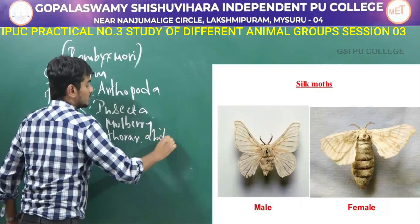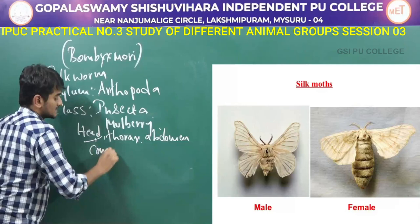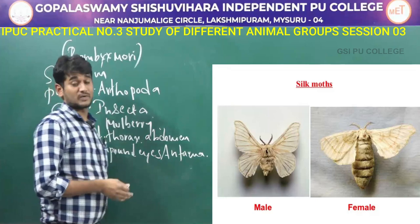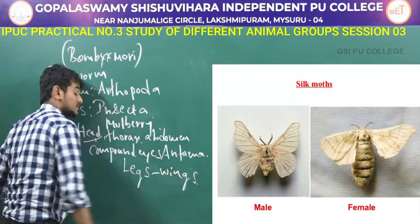Each part is covered with microscopic scales. The head contains a pair of compound eyes and presence of antennae. The thorax region has ventrally a pair of legs and dorsally a pair of wings.